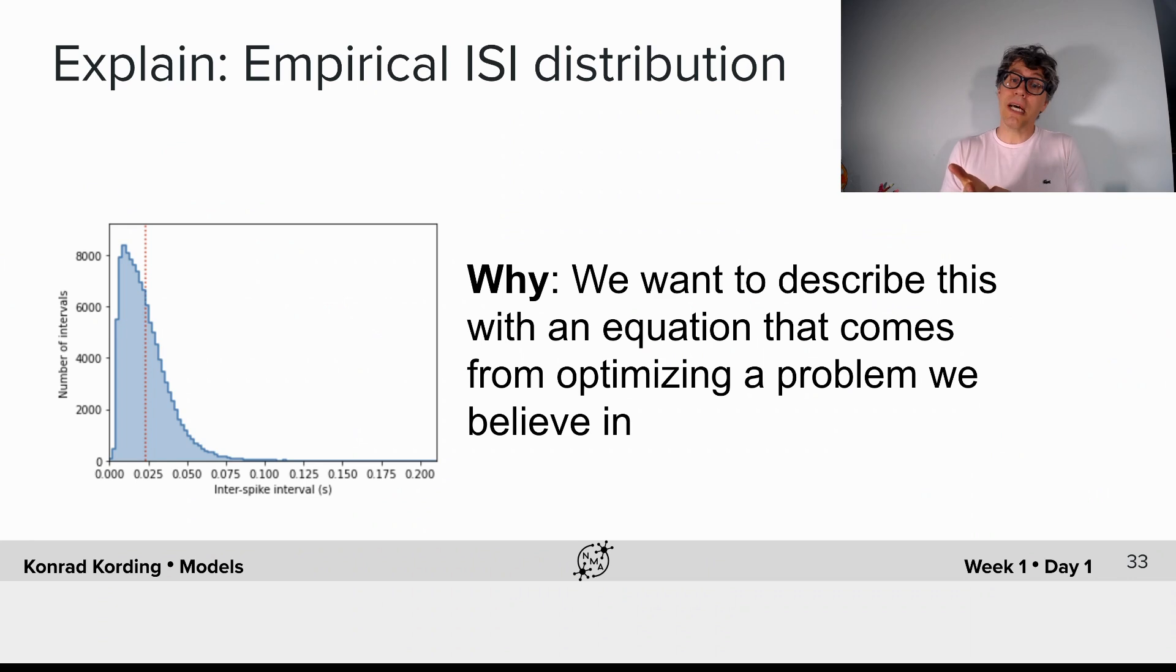But now we want to ask a different question. We don't want an equation that describes how the brain does it. We want an equation that describes why doing it like that would be a good idea. If you want, we want to ask the question that's behind the how.